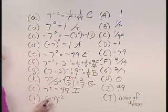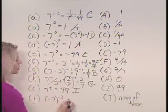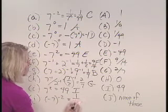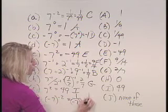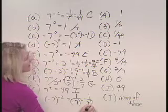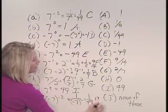And then finally, negative 7 raised to the negative 2 power would be equal to 1 over negative 7 squared, which is 1 over 49, and that would be selection c.